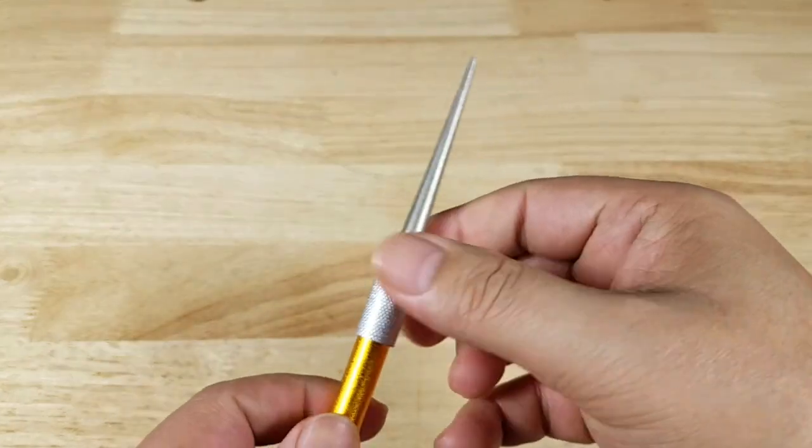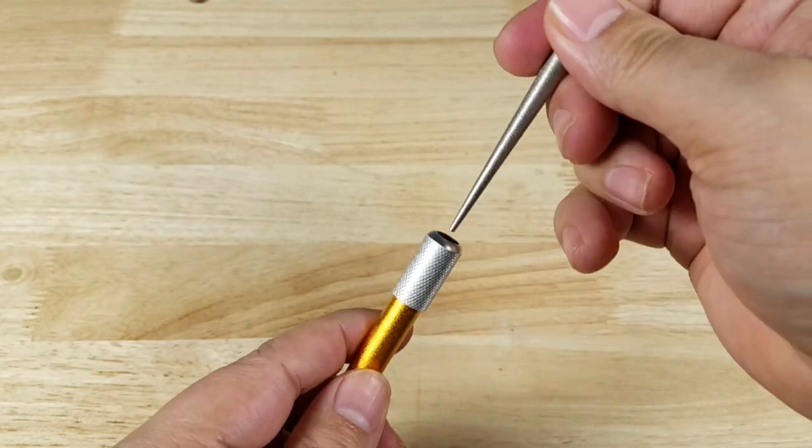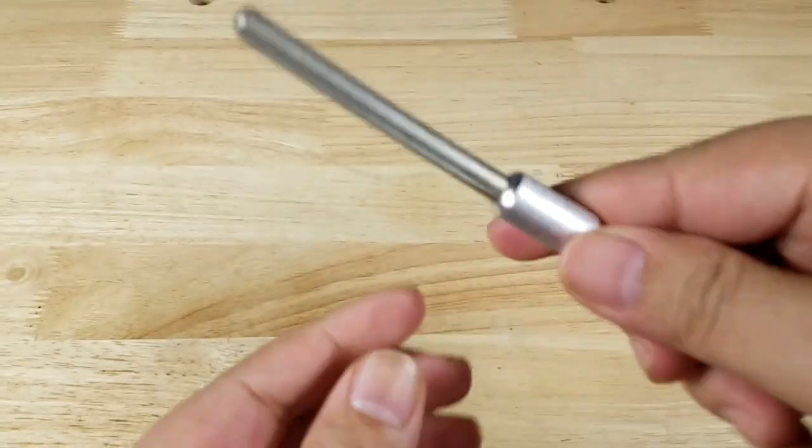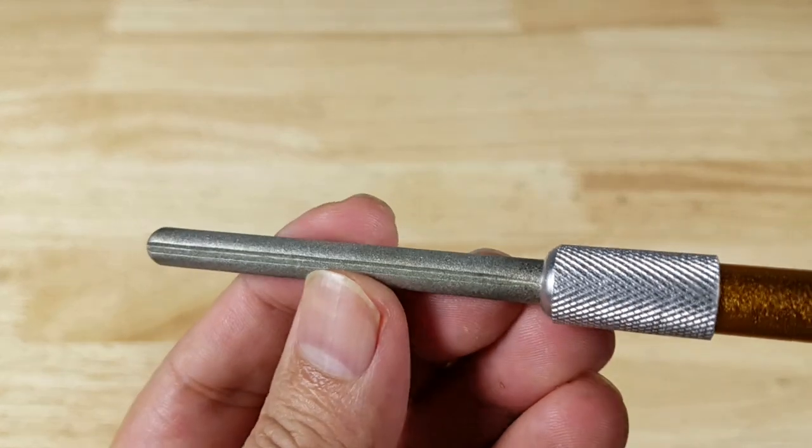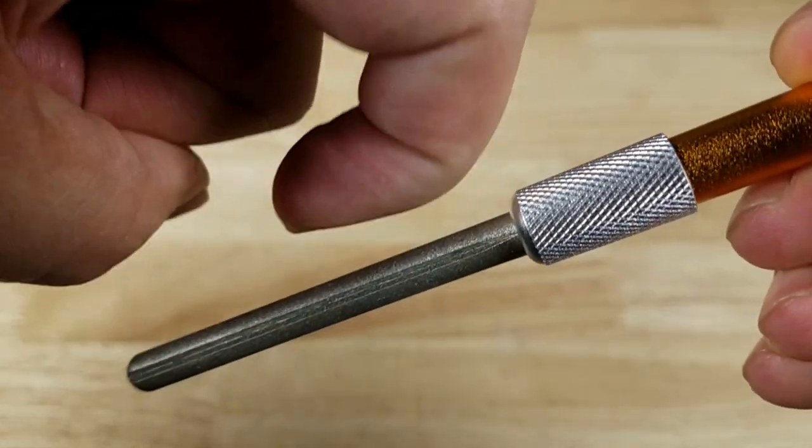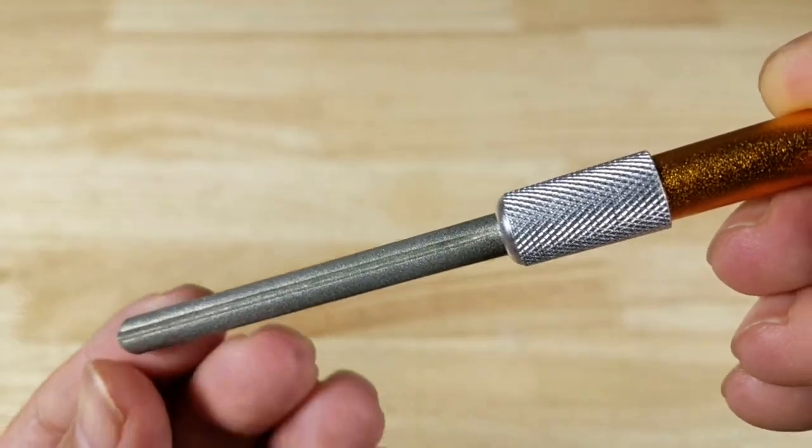Some of them also have a groove for sharpening fish hooks, so you would just turn this one around like that, lock it back down, and when you turn it around you can see that there's a groove cutting like that. So you would get your fish hook like that and just run it down like that to sharpen that fishing hook.